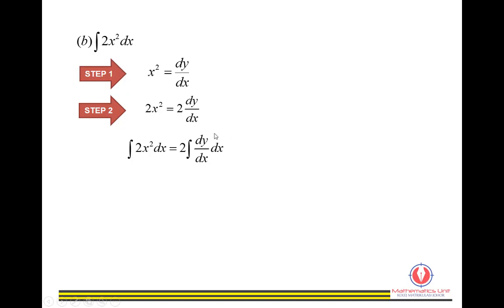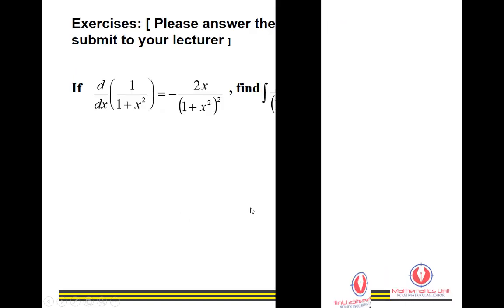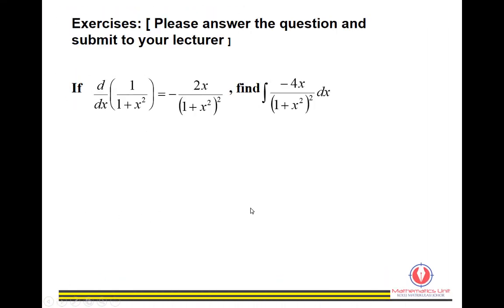For an extended result, multiplying both sides by 2: ∫2x² dx = (2/3)x³ + c. That's all for today. Please answer the given questions and submit them to your lecturer.